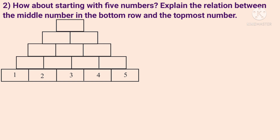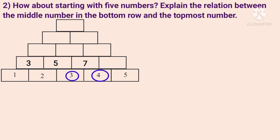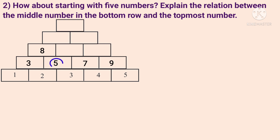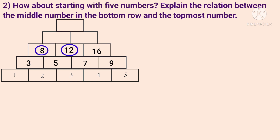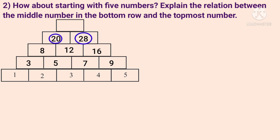I will show you 5 numbers in the number pyramid. 1 plus 2 is 3, 2 plus 3 is 5, 3 plus 4 is 7, 4 plus 5 is 9. Then 3 plus 5 is 8, 5 plus 7 is 12, 7 plus 9 is 16. Next level: 8 plus 12 is 20, 12 plus 16 is 28. Then 20 plus 28 is 48.